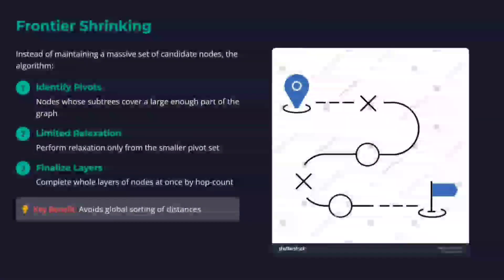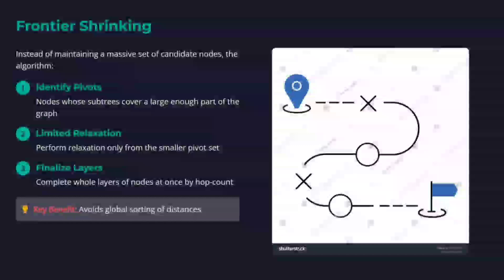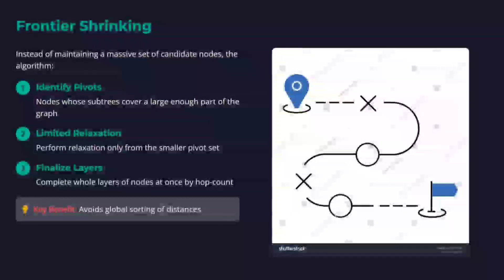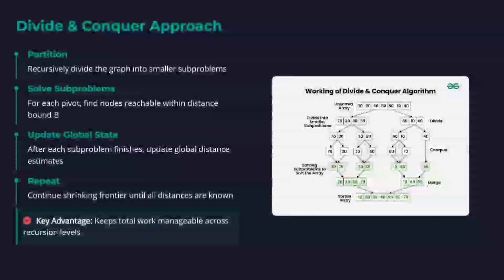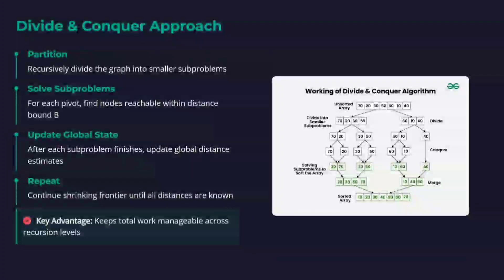Frontier shrinking: instead of maintaining a massive set of candidate nodes, the algorithm identifies something called pivots. Limited relaxation: updating for a given node is not for every node but for a few sets of nodes, and finalizing whole layers of nodes at once by hop count. Divide and conquer: recursively partitions the graph into smaller subproblems.